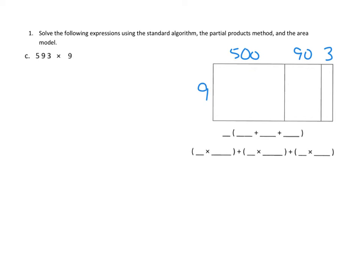If we did it this way, we would be multiplying each of the partial products here in the area model. So 9 times 500 would be 4,500. If we multiplied 9 times the 9 tens, we'd get 81 tens.